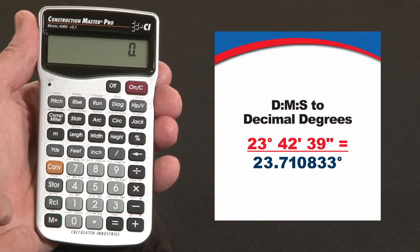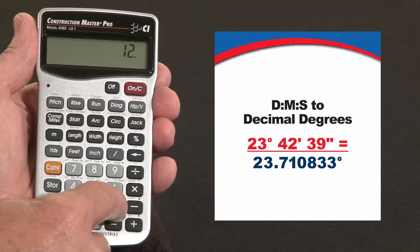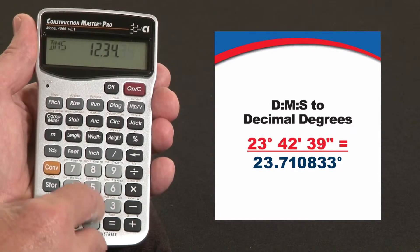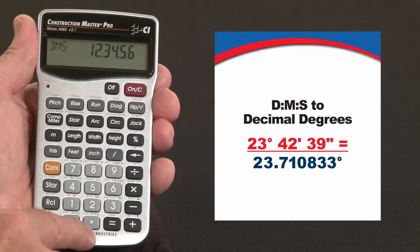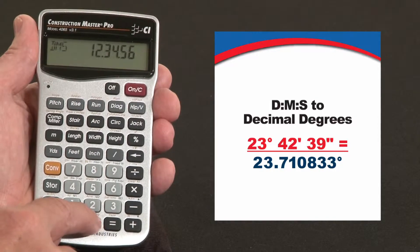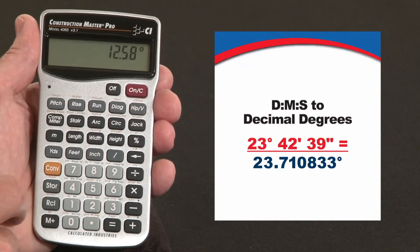Say you've got a set of plans that say 12 degrees, 34 minutes, and 56 seconds, and you want to convert that. Hit convert over the decimal point key, it says DMS to decimal degrees, 12.58 degrees.